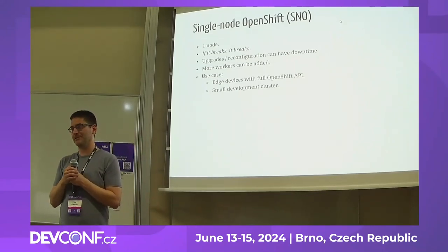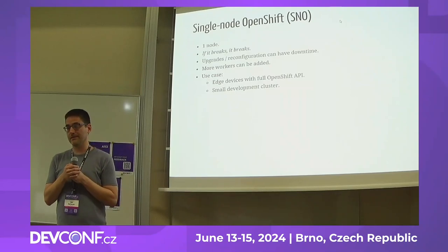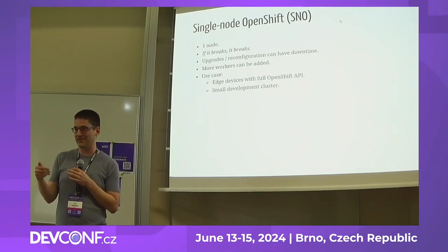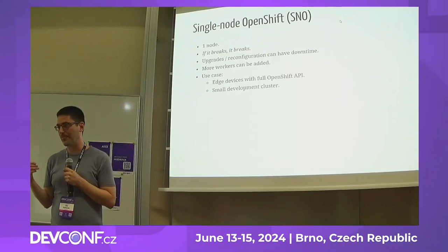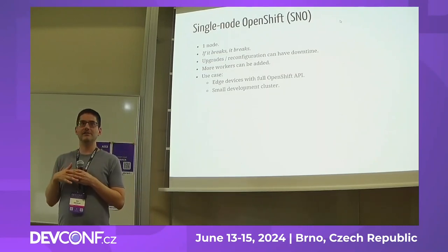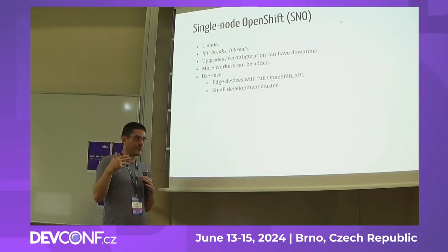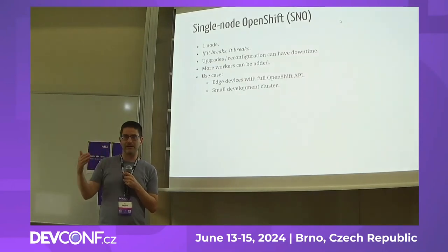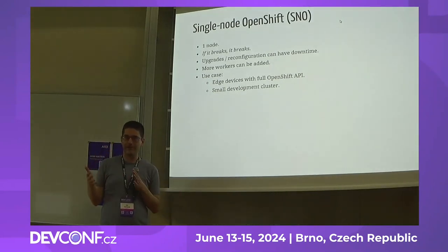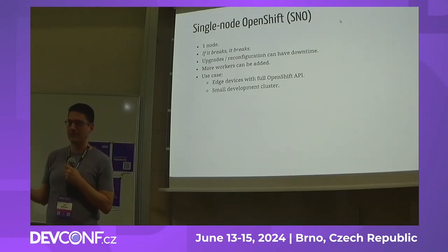You can add more workers, so it's not necessarily single node OpenShift — it could be single control plane OpenShift. But it has the same disadvantages: if the control plane breaks, you lose your cluster. The use case here is development, of course, and edge devices — beefy edge devices. When your company's build pipelines and applications are used to OpenShift APIs, you can use them in your data center with highly available OpenShift and also deploy to the edge with single node OpenShift using similar APIs and similar manifest files.